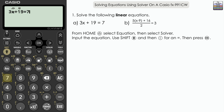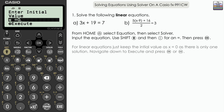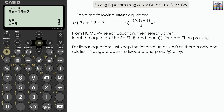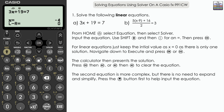Once you've inputted the equation, press Execute and the calculator prompts you for a value of x. Essentially, the calculator tries different values of x until it finds the correct solution — you're telling it to find the solution closest to your starting value. Since it's a linear equation with only one solution, any value will do, so keep the default value of zero. Navigate down to Execute and press OK. The calculator has solved the equation: x equals negative 4.